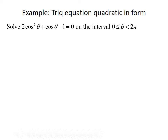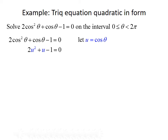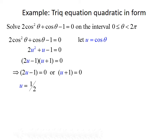Now let's look at an example where we solve a trig equation that's quadratic in form. We want to solve 2cos²θ + cosθ − 1 = 0 on the interval from 0 to 2π. We use a substitution: let u equal cosine of theta. This gives us 2u² + u − 1 = 0, which factors as (2u − 1)(u + 1) = 0. Setting each factor equal to zero gives u = 1/2 or u = −1, so cosine of theta equals 1/2 or cosine of theta equals −1.